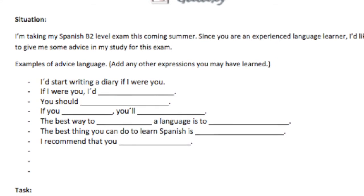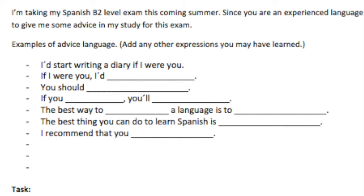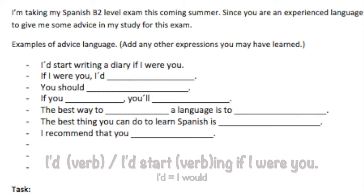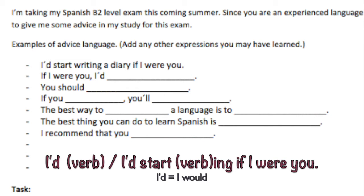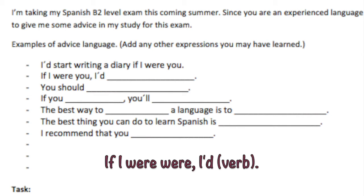Here are some examples of advice language expressions and forms you can learn, memorize, and use when you speak English. The first one: 'I'd start writing a diary if I were you.' The form is 'I'd start' followed by the gerund — the -ing form of the verb. For example: 'I'd start speaking the language if I were you,' 'I'd start writing a diary,' or 'I'd start studying every day.'